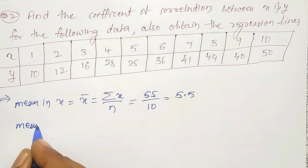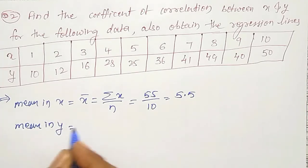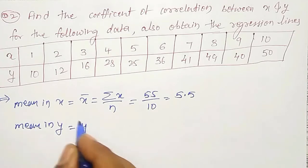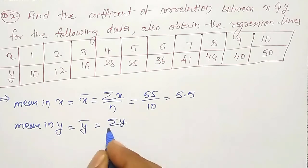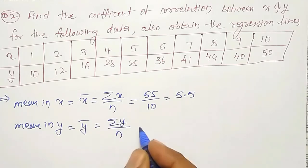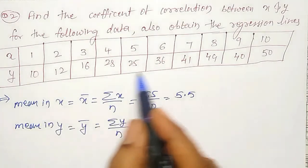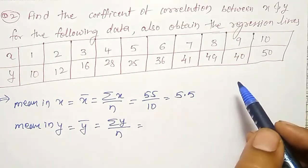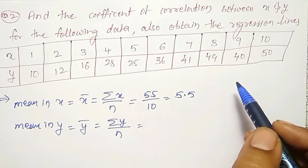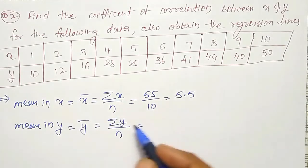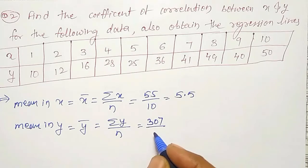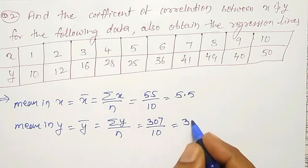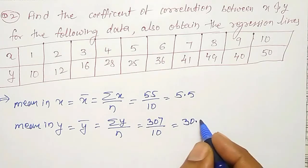Similarly, mean of y — y-bar equal to summation of y divided by n. Summation of y, if you add all those things, we are getting 307 divided by 10, that is 30.7.